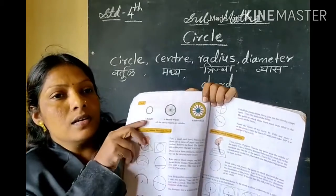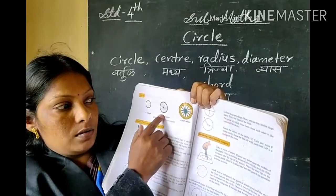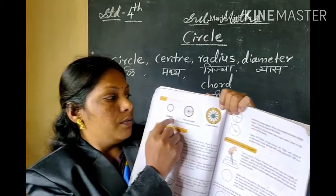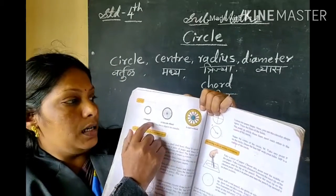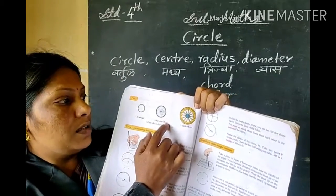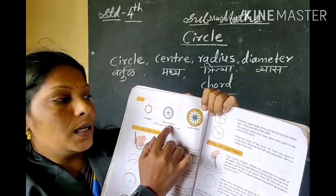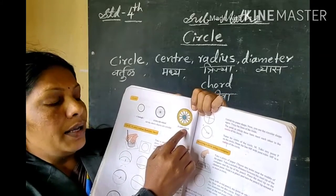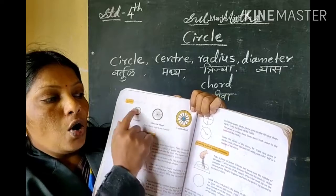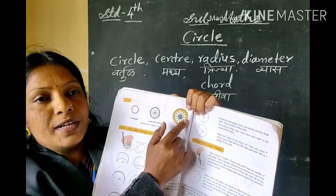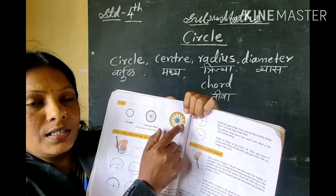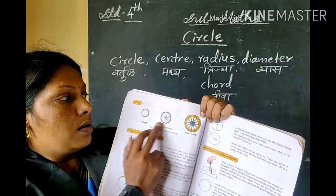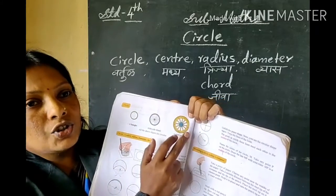These are the parts of the circle and some pictures are shown. The first picture is of a bangle, the second is a bicycle wheel, and the third one is a cart wheel. All three of these objects are in a circular shape.